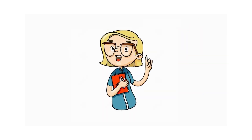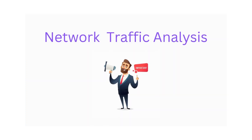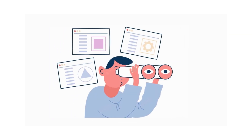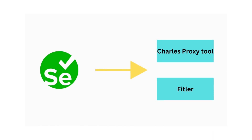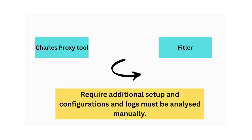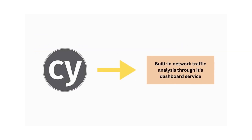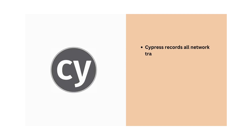A lot of companies ignore the ability to analyze network traffic when choosing an automation tool, but it's an important feature. In Selenium, network traffic analysis is typically done using a proxy tool such as Charles or Fiddler, which intercepts and logs the network traffic between the browser and the web server. These tools can be configured to work with Selenium, but they require additional setup and configuration, and logs must be analyzed manually. Cypress, on the other hand, provides built-in network traffic analysis through its Dashboard service, which records all network traffic during a test run and makes the logs available for analysis.